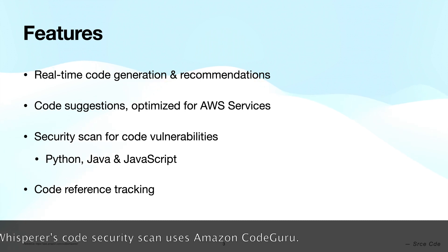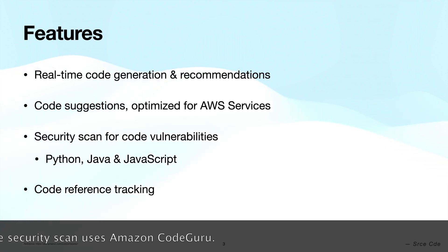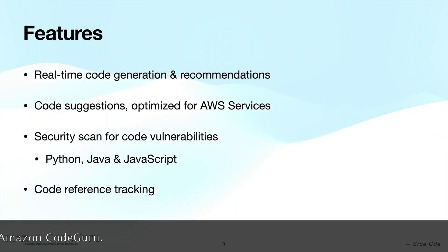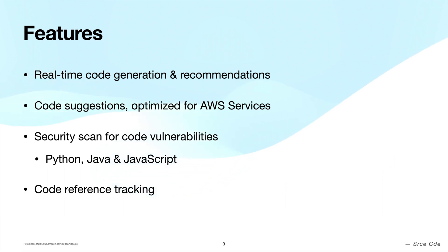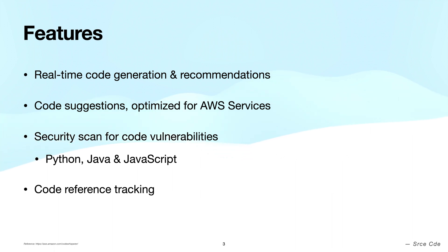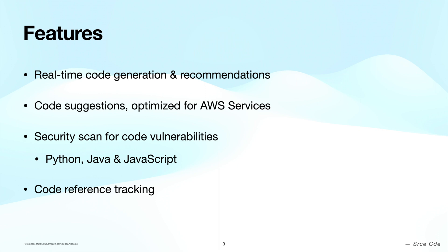Another feature is the reference tracker for open source code. It detects if code suggested by CodeWhisperer is similar to CodeWhisperer's open source training data. In that case, the reference tracker will flag such suggestions with the open source project repository URL and its license. All references will be logged to be reviewed later, and you can make an informed decision about whether to use that snippet in your project.